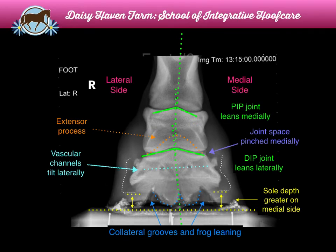This is another example of a different kind of rotational deformity on this limb. The things I'm looking at are the same, but the balance decision at the end comes out very differently. Again, it's a right foot. My markers on the left side of my image, so the lateral side is the left side and the medial side is the right side of the image. I'm looking at my sole depth, which is greater on the medial side, and my vascular channels, which are tilting laterally — that whole foot is rolling to the lateral side.